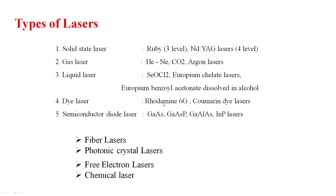Fourth, dye laser — Rhodamine 6G and Coumarin dye lasers. Fifth, semiconductor diode laser — homo-junction and hetero-junction semiconductor diode lasers. Homo-junction material: Gallium Aluminium arsenide; hetero-junction diode laser: Gallium arsenide phosphide and Gallium Aluminium arsenide. Also Indium Phosphide semiconductor diode lasers. Currently, in the solid-state category, fiber laser, photonic laser, free electron laser, and chemical laser devices are also used.